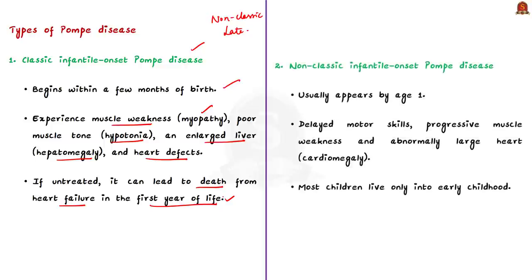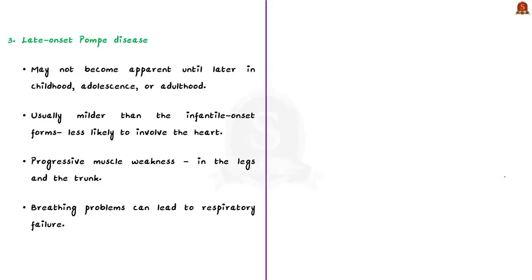The non-classic form of infantile onset Pompe disease usually appears by age one. It is characterized by delayed motor skills and progressive muscle weakness. The heart may be abnormally large (cardiomegaly) but affected individuals usually do not experience heart failure. The muscle weakness leads to serious breathing problems and most children live only into early childhood. The late onset type may not become apparent until later in childhood, adolescence, or adulthood. It is usually milder and less likely to involve the heart, with individuals experiencing progressive muscle weakness especially in the legs and trunk, which can lead to respiratory failure.